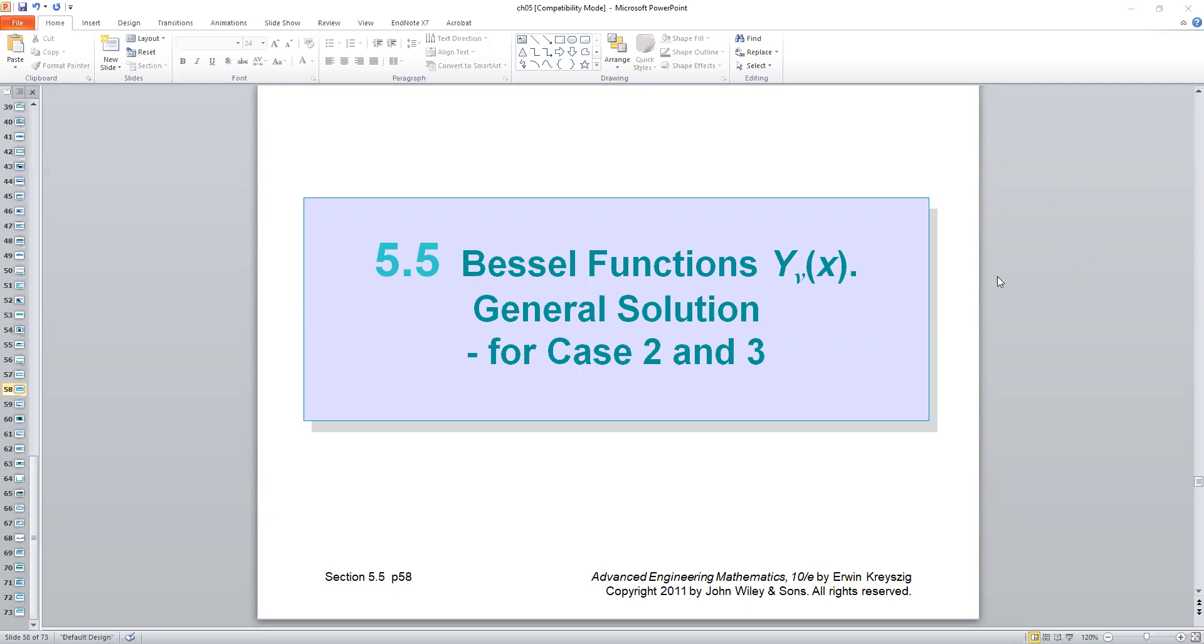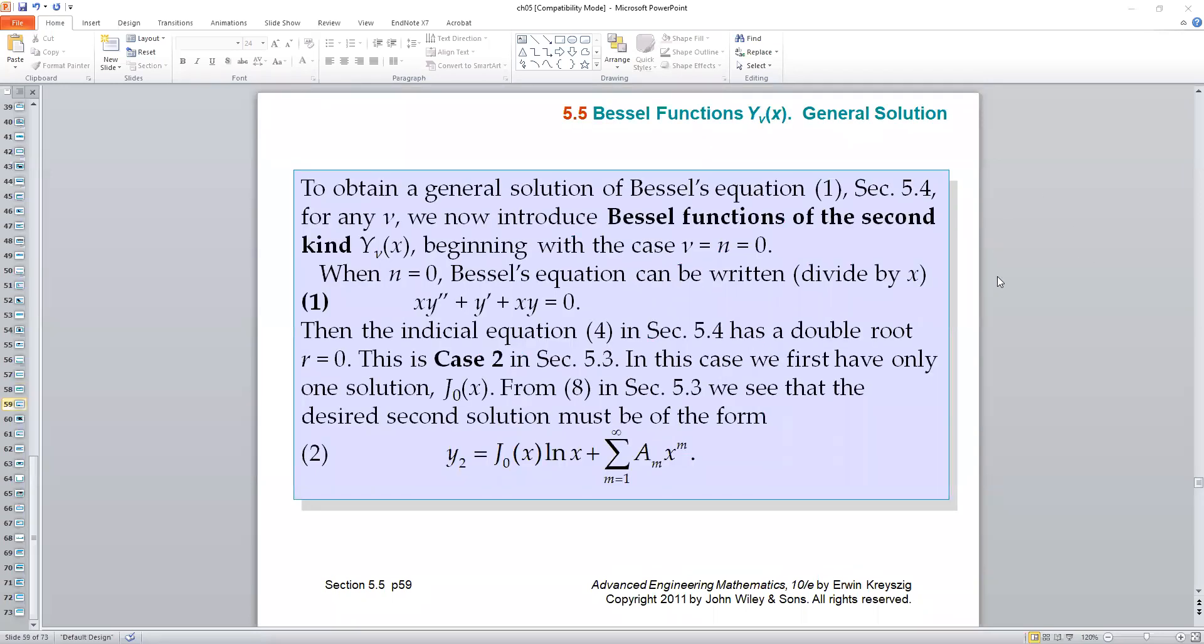Let's look at the case 2 problem. If the two roots of the indicial equation are identical, that corresponds to nu equal to 0. So the Bessel equation reduced to this form without nu in the last term. If this is case 2 of the Frobenius series solution problem, then we have to approach the solution in this way.